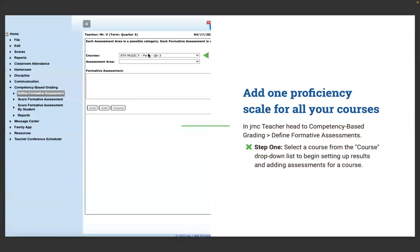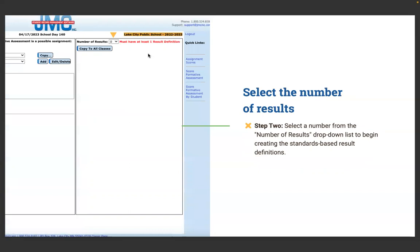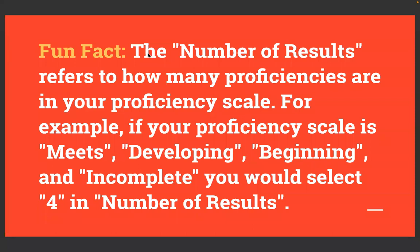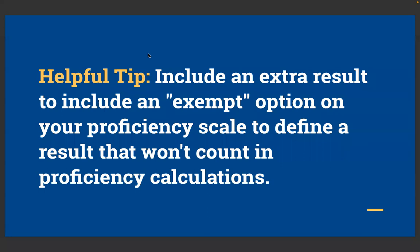We'll start by establishing your proficiency scale. Head to Competency-Based Grading > Define Formative Assessments in JMC Teacher. Step one: select the course from the courses drop-down. Step two: select a number from the Number of Results drop-down to begin creating the standards-based result definitions. The number of results refers to how many proficiencies are in your scale. For example, if your scale is Meets, Developing, Beginning, and Incomplete, you'd select four. Helpful tip: include an extra result to include an Exempt option that won't count in proficiency calculations.